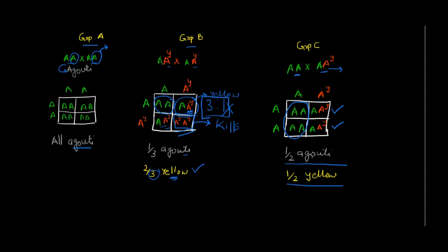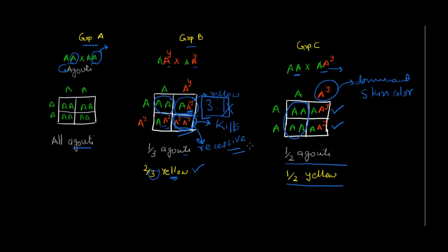In terms of skin color, this lethal mutation in heterozygous condition acts as a dominant allele — it changes the phenotype. But with respect to lethality, it is recessive, because it is only lethal in homozygous condition. Do not get confused: one copy changes the skin color (dominant for phenotype), but two copies cause death (recessive for lethality).